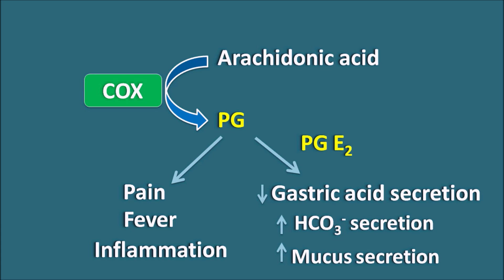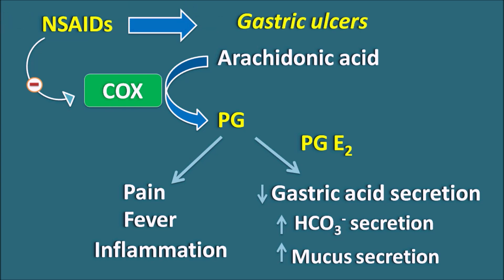When drugs like NSAIDs — non-steroidal anti-inflammatory drugs — are used, they inhibit the COX pathway and thereby inhibit the synthesis of prostaglandins. As prostaglandins are not synthesized, NSAIDs can reduce pain, fever, and inflammation. However, they also inhibit the synthesis of protective prostaglandins like PGE2, thereby increasing gastric acid secretion. That is why NSAIDs can induce gastric ulcers.